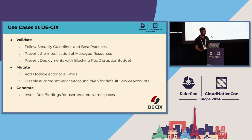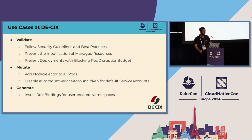We also have a validation policy that ensures no one can deploy a blocking PodDisruptionBudget. We've seen quite often teams deploy a Deployment with one replica and then a PodDisruptionBudget with minAvailable also set to one. When a cluster node update occurs, the node drain would be blocked because minAvailable equals the replica count. To prevent this, we created a Kyverno policy that blocks that situation.